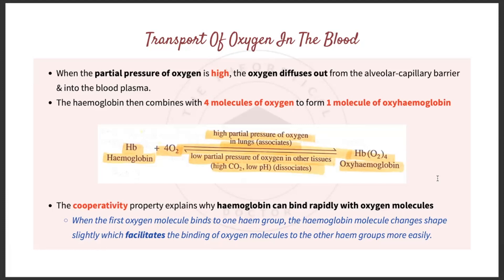After the four oxygen molecules combine with hemoglobin to form oxyhemoglobin in the lungs, the oxygenated blood is transported to the left atrium, then the left ventricle, and pumped through the systemic circulation to the systemic capillaries in tissues. In actively respiring tissue, the partial pressure of oxygen is lower than in the capillaries, causing oxyhemoglobin to dissociate and liberate four molecules of oxygen for cellular respiration. The hemoglobin is then transported back to the lungs, ensuring continuous oxygen supply to respiring tissues.